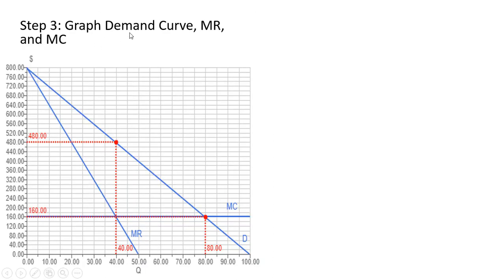The next step is to graph the demand curve, marginal revenue curve, and marginal cost curve to help us locate the deadweight loss triangle. Marginal revenue looks like the inverse demand but with a slope twice as steep — so if demand touches the quantity axis at 100, marginal revenue touches it at 50. We found numerically that MR equals MC at q equals 40, and the monopolist's profit-maximizing price is $480.